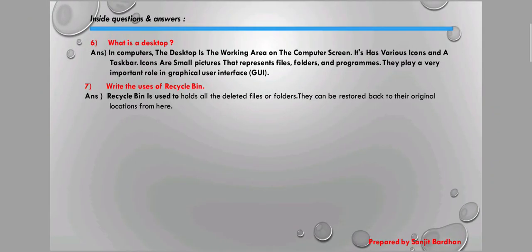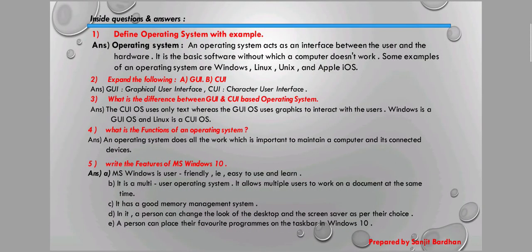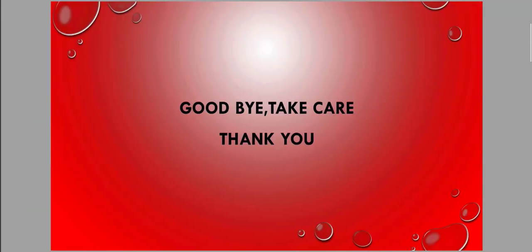Question five: Write the features of Windows 10. Question six: What is a desktop? Question seven: Write the uses of Recycle Bin. I will give more questions in my next video. You can write the question answers on your computer copy. I will also provide all question answers as a PDF file — click the link in the YouTube description box to download it. Read the book carefully for better understanding. Goodbye, take care, and thank you.